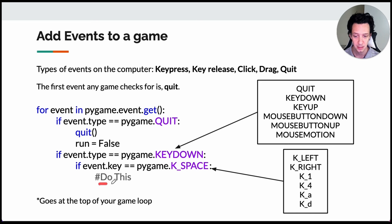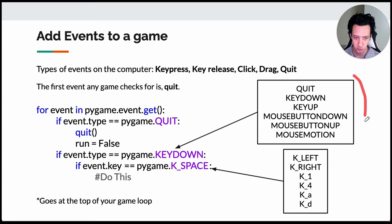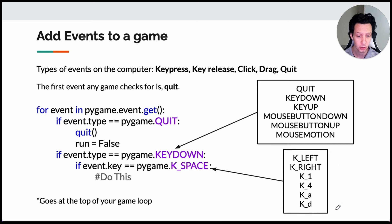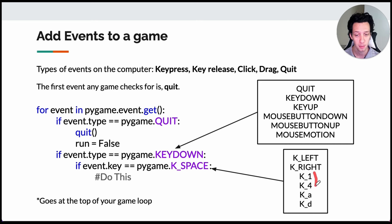After the quit event, it's up to you what other events your game will use. You can create another condition for a new event type — for example, if the event type equals KEYDOWN, then Python can listen for a specific key. If the event key equals K_SPACE for the space bar, you can do whatever you want inside. Note that all event constants are capitalized — these are called constant variables.